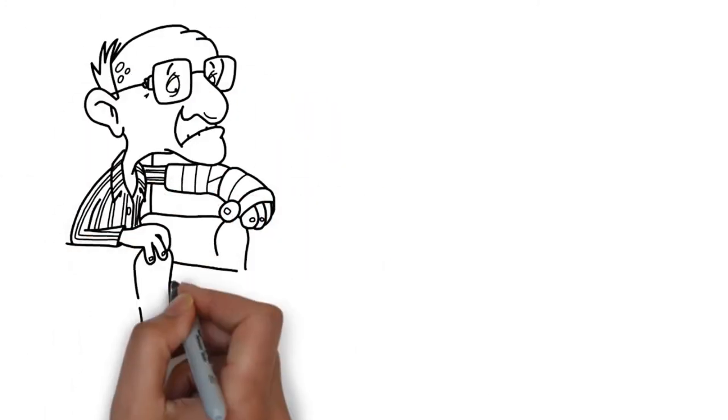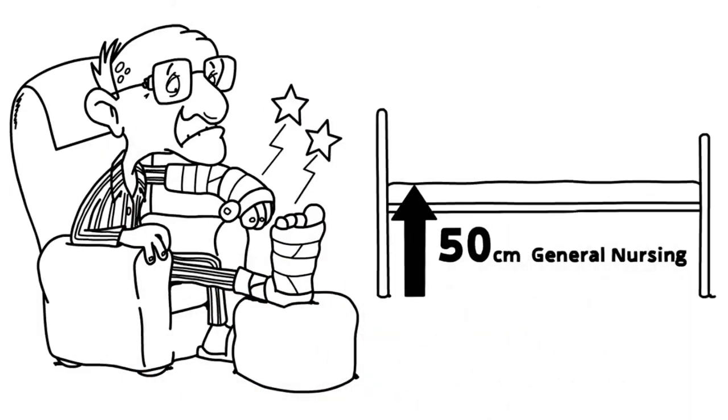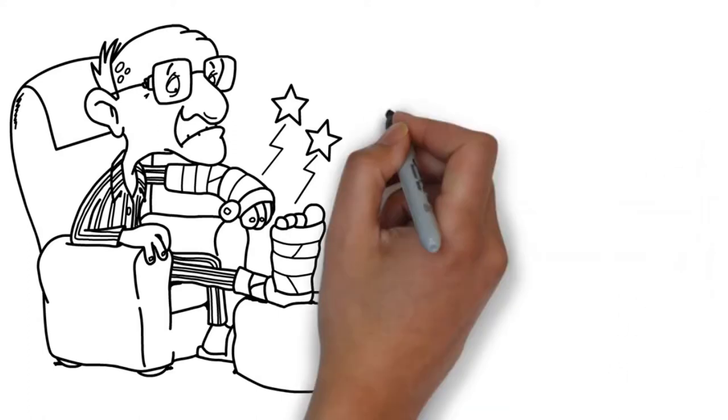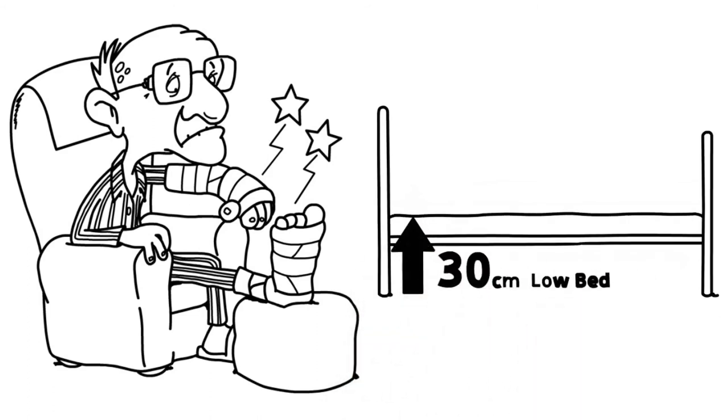The height of a nursing bed combined with a mattress can be up to 50 centimetres from the floor. A vulnerable person falling from that height carries a high risk of bruising, fractures or even hospitalisation. Even conventional low beds can still cause injury for a frail person falling from bed.